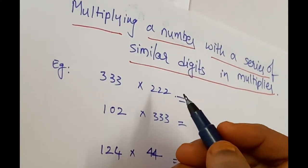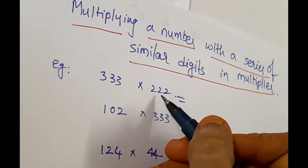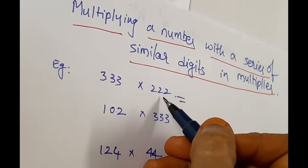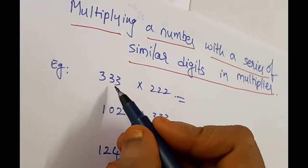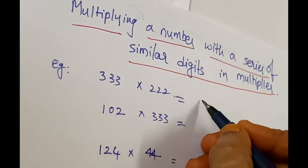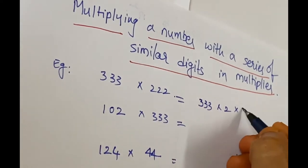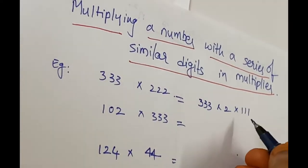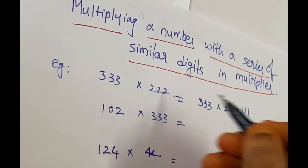With the series of ones, that is 11, 111, 1111, like this, we have to convert the multiplier here into a series of ones. So 333 into 222 equals—we can write it as 333 into 2 into 111. Converting this number into a similar series of ones...